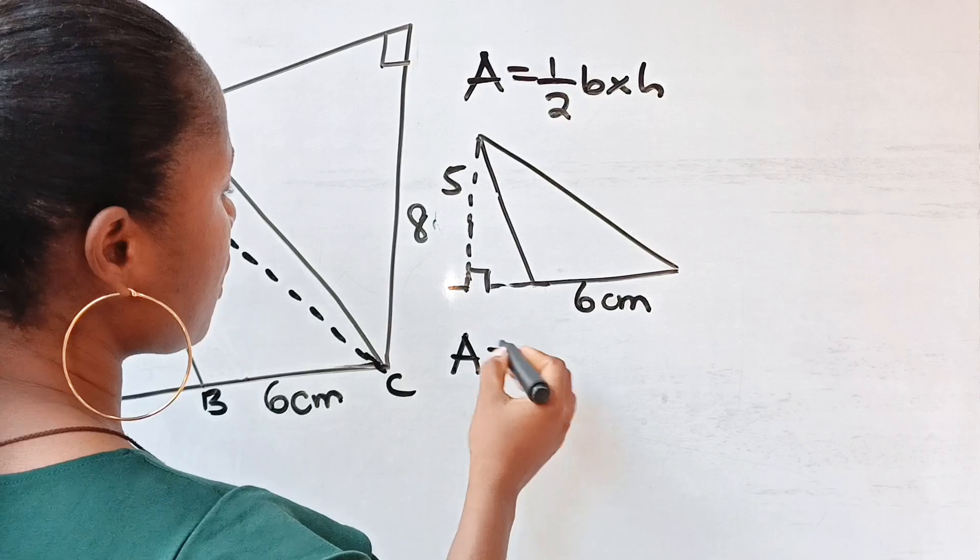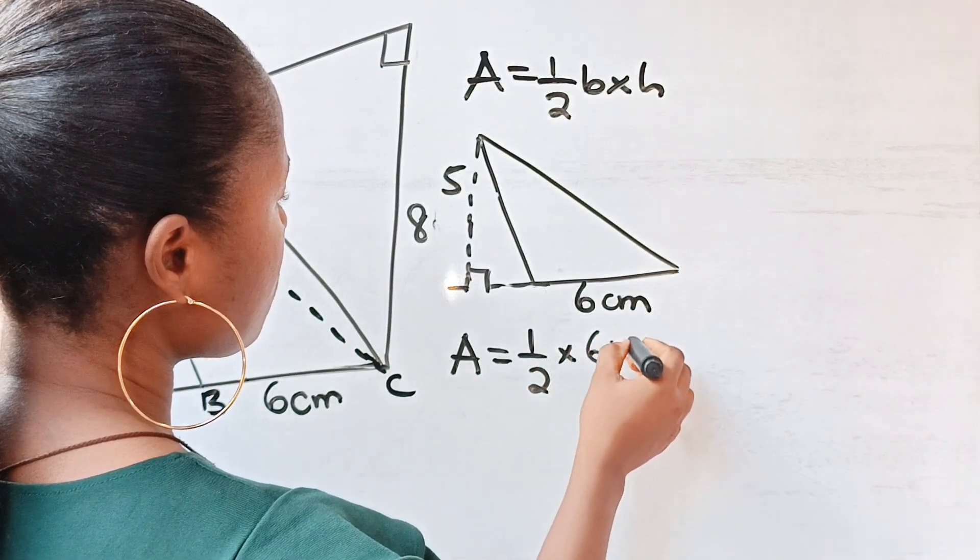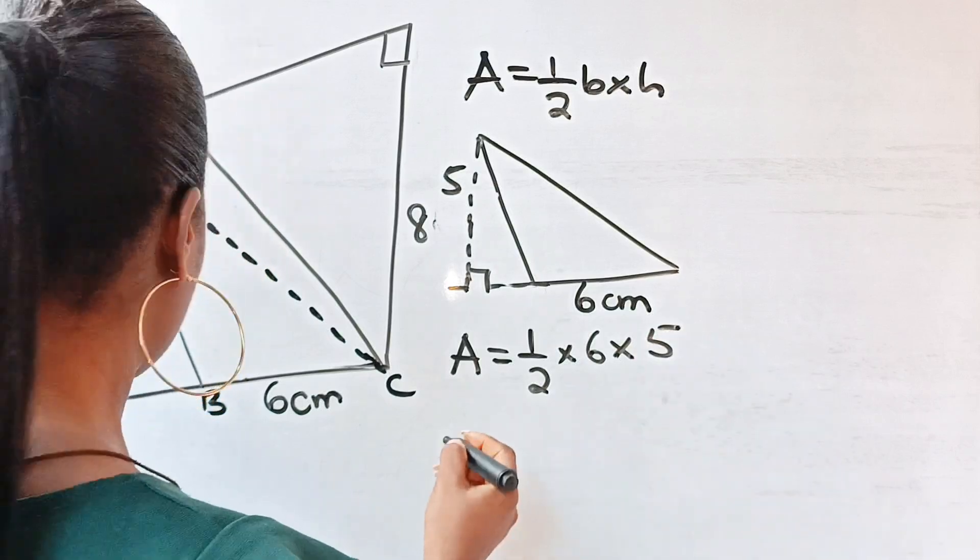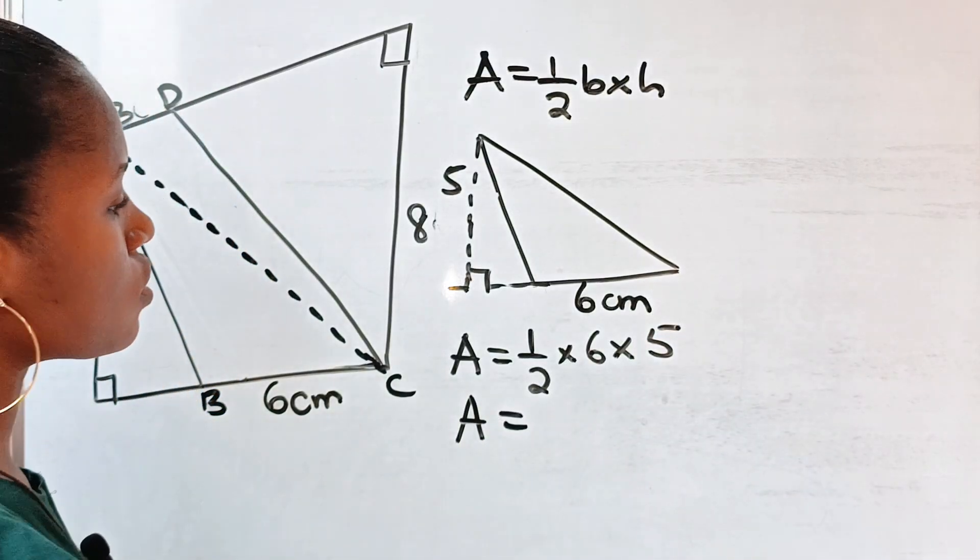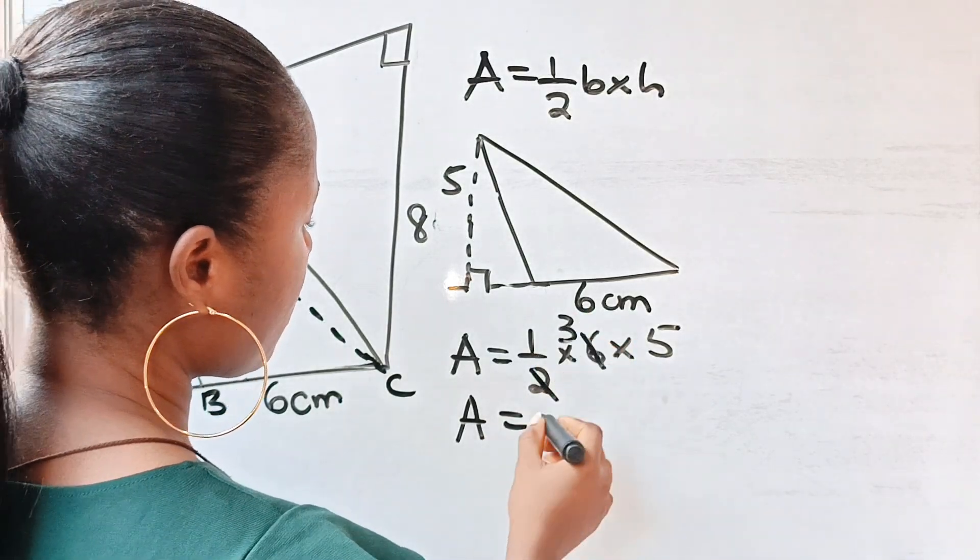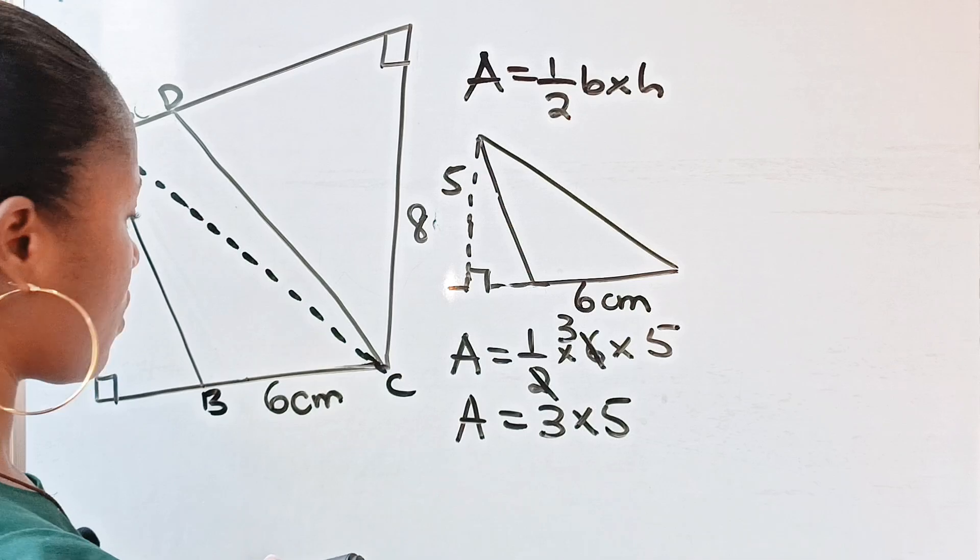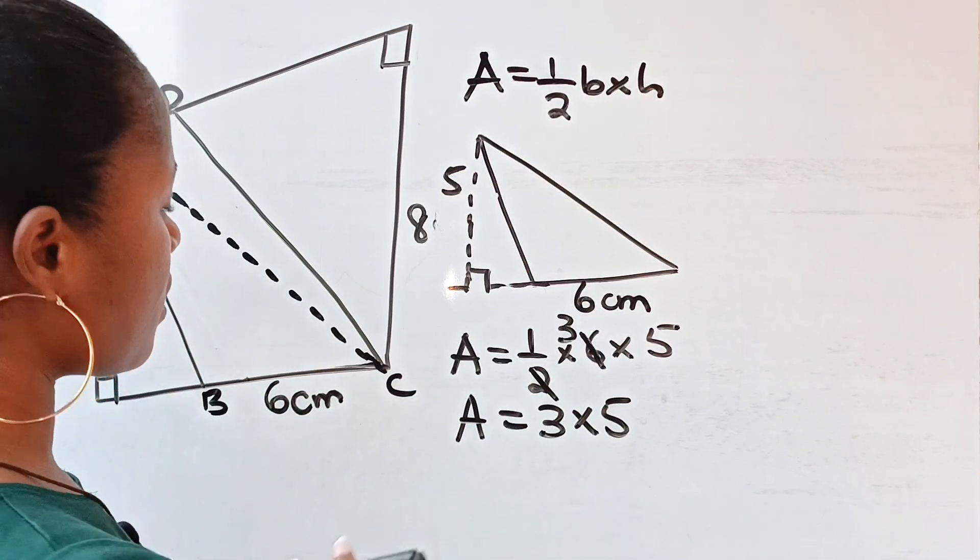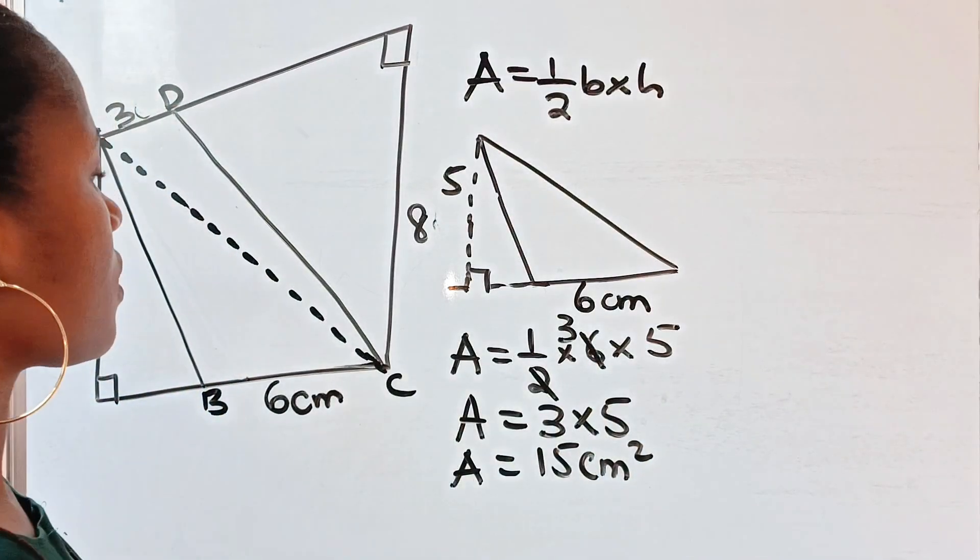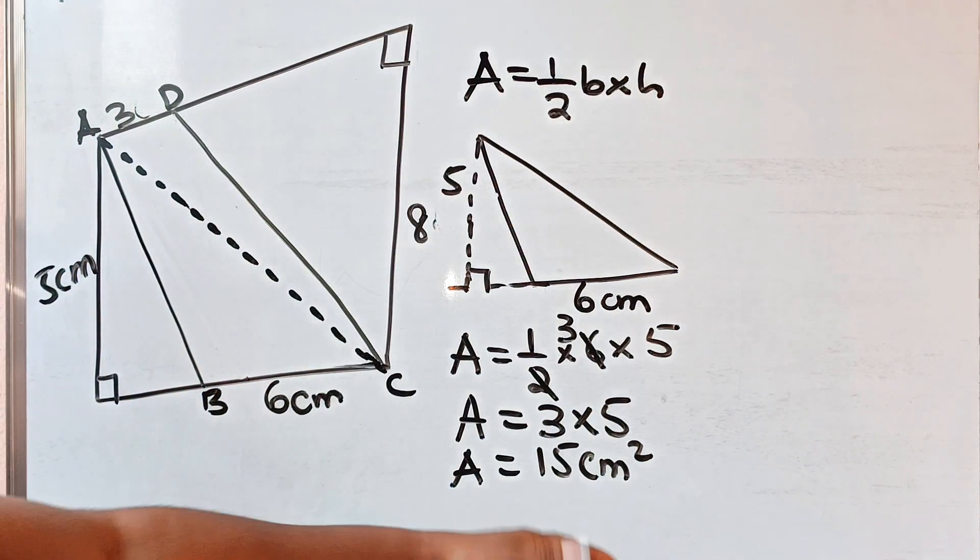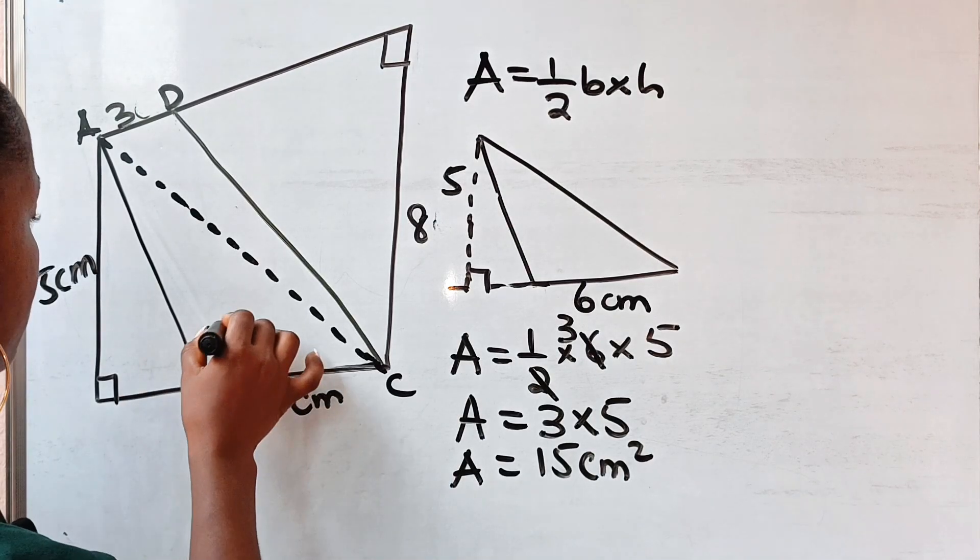So it means that the area is equal to half multiplied by 6 multiplied by 5. So area is equal to, when 2 divides 6 we have 3, so it's going to be 3 multiplied by 5. Now the area is 15 cm squared. All right, now we have found this to be 15 cm squared.